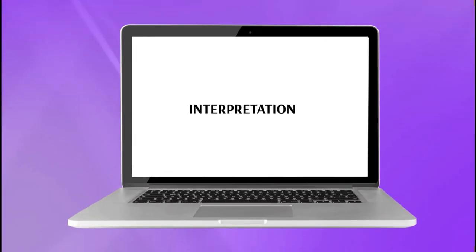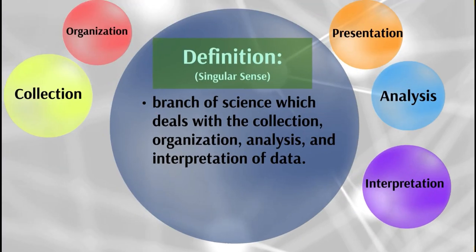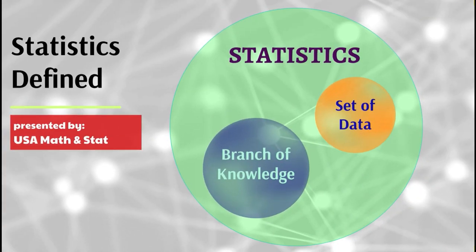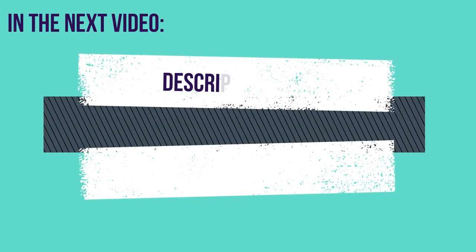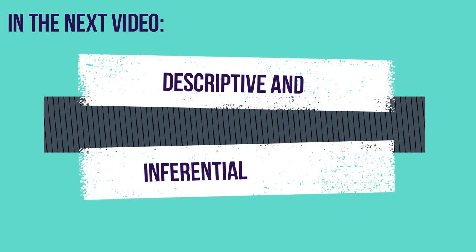The final step in a statistical inquiry is the interpretation of data. This is the process of explaining the meaning of data with emphasis on highlights and trends shown by the data. It explains the meaning and relates the findings to results of related studies and the theoretical or conceptual framework. Correct interpretation gives valid conclusions. Hope you learned something. In our next video we'll talk about methods of applied statistics and differentiate descriptive and inferential statistics. Thank you for watching.